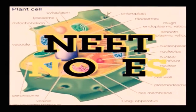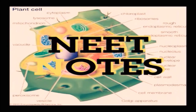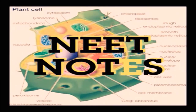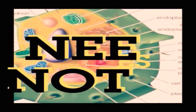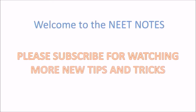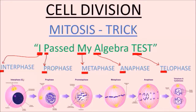Welcome to my channel Nate Nose. Today I will explain a trick to remember the sequence of mitosis. We need to remember this whole sentence: 'I pass my algebra test.' I is for Interphase, P is for Prophase — which you can relate to the word prophase.